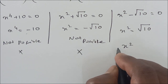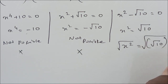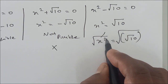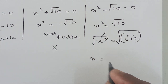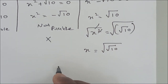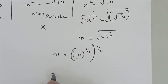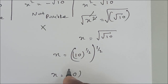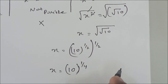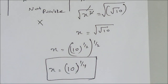Taking the square root of both sides: x = √(√10). We can cancel the square and square root, so x = 10^(1/2) raised to the power 1/2 again, giving x = 10^(1/4). The answer is x = 10^(1/4).